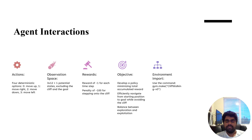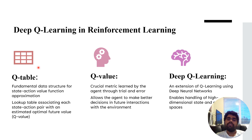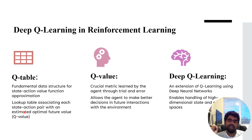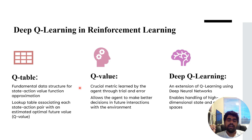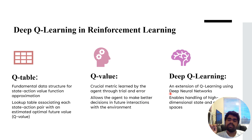We imported the environment using the command gym.make('CliffWalking-v0'). For deep Q-learning, we start with the Q-learning algorithm, which uses state-action pairs to represent each state with its associated value. The Q-table depends on the number of states and actions. If there are 10,000 states and 10,000 actions, the Q-table becomes very large, making Q-learning computationally expensive. Therefore, we move on to deep Q-learning.